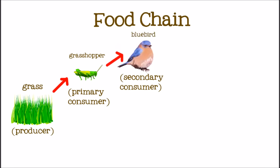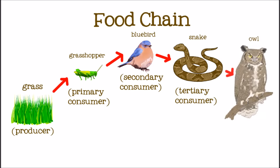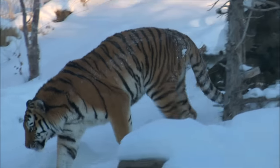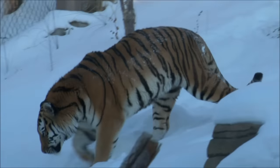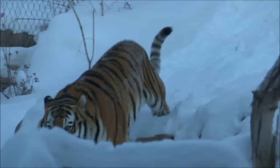Then the bluebird gets eaten by a tertiary, or third-level consumer, a snake. The snake is eaten in turn by an owl. The owl is the apex predator in this food chain.